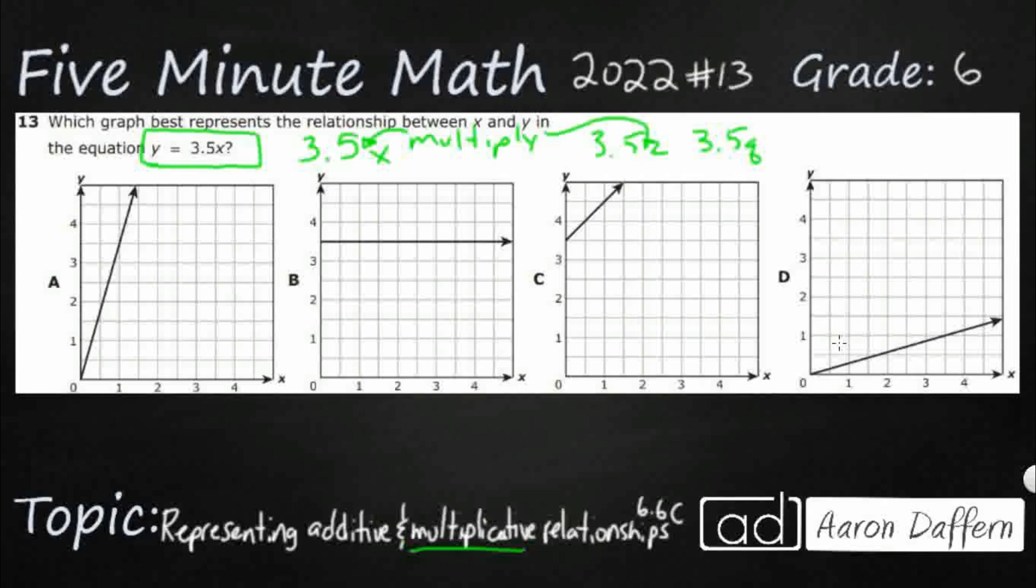So we have a multiplicative relationship here and all we have are some graphs. So the easiest way to do it is let's just plug in some numbers. Let's generate our own x and y coordinates. And you should always start with the simplest ones. So I'm going to just make a little table here. And x. And here's my y.